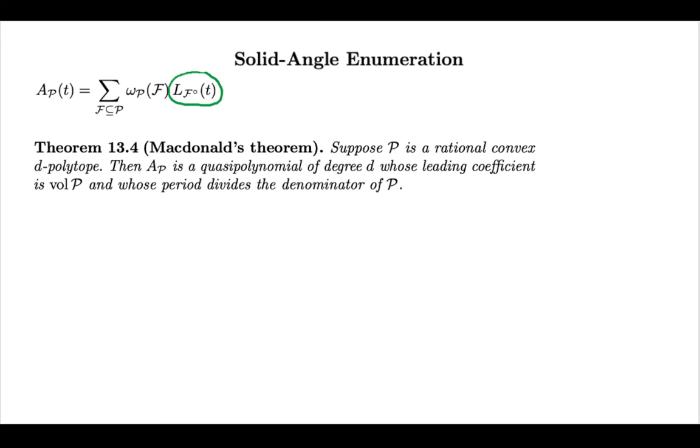The next thing we will define, this is not going to be a surprise to you, is the analog of an integer point transform in the solid angle world. For my integer point transform, I'm just summing z to the m over all integer points in P. And so what I'm now doing, I will weigh each of those monomials by the solid angle of m.